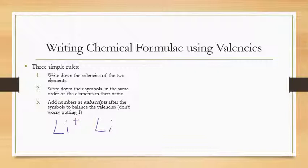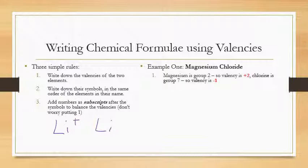The first example uses ionic bonding: magnesium chloride. Magnesium is in group two, so the valency is +2. Chlorine is in group seven, so the valency is −1. So we start with MgCl. To balance out Mg²⁺ and Cl⁻, you need two chlorides, giving MgCl₂.